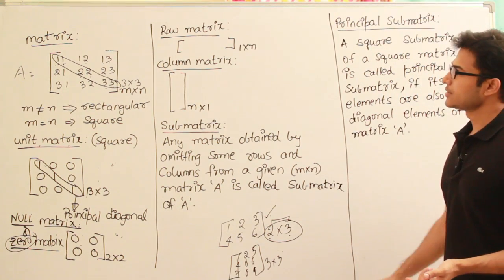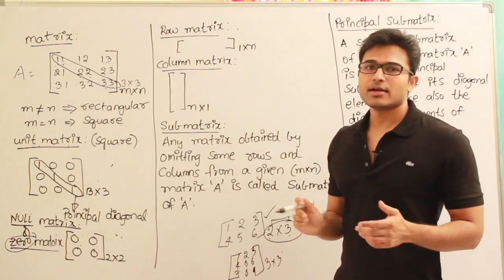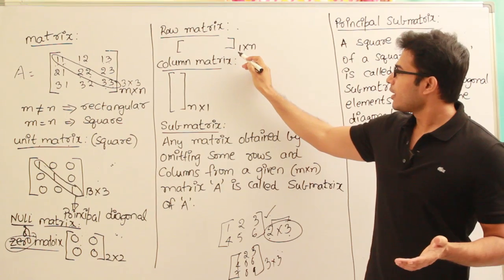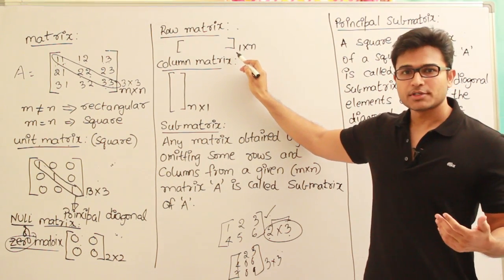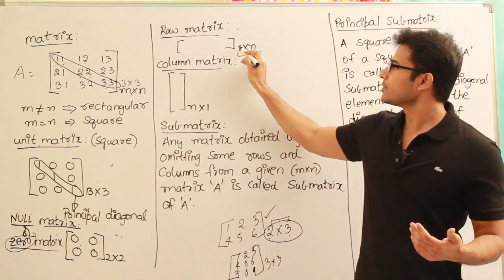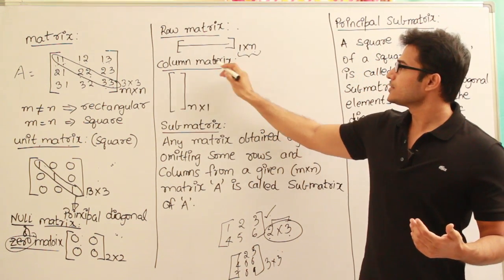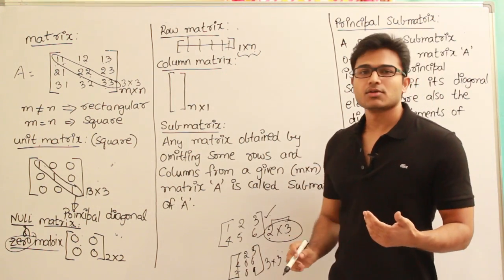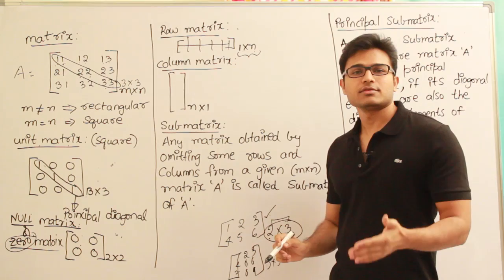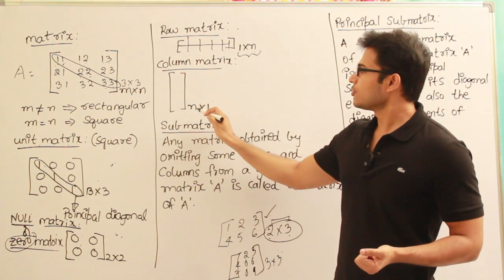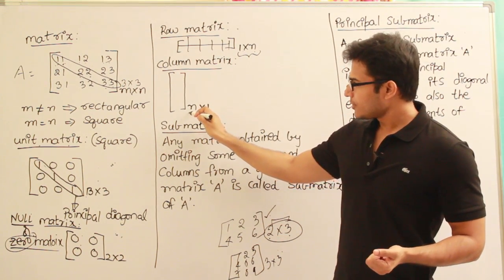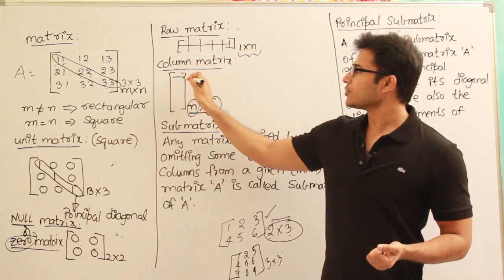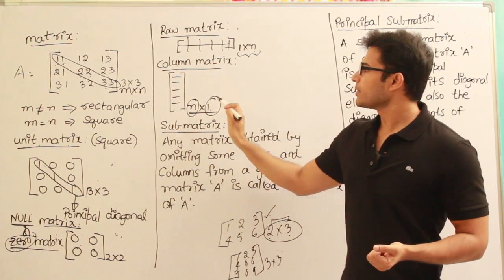The next type is the row matrix. A row matrix means the entire matrix consists of completely one row, represented as 1 by n — where 1 means only one row and n means there are n columns. A column matrix means the entire matrix consists of only one column, represented as n by 1 — where n means n rows and 1 means one column.